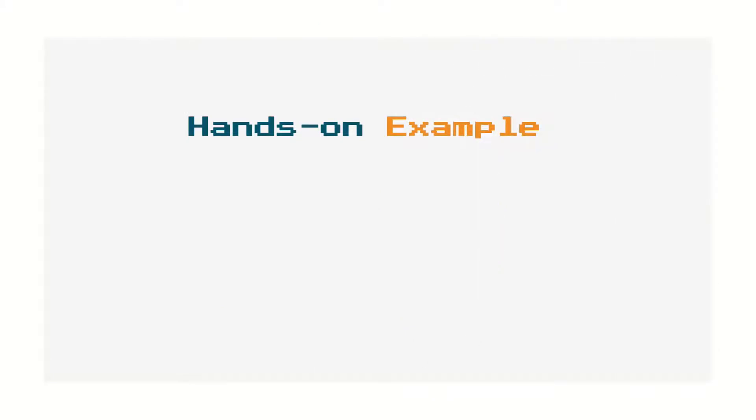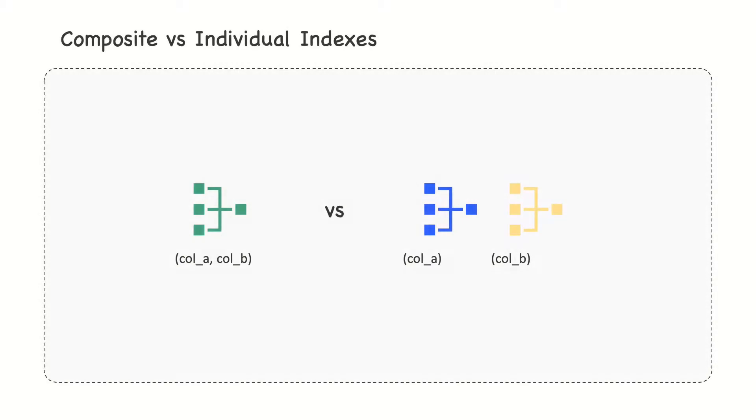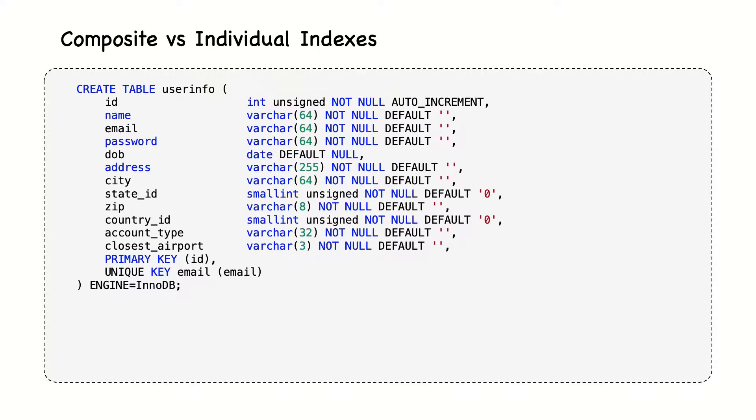Now, it's time to see some examples and verify ourselves how indexing affects the performance. We want to test what is the response time for an index on two columns, that is, a composite index versus two individual indexes on the same two columns. We'll use a table that looks like this. Basically, we store some contact information about users.